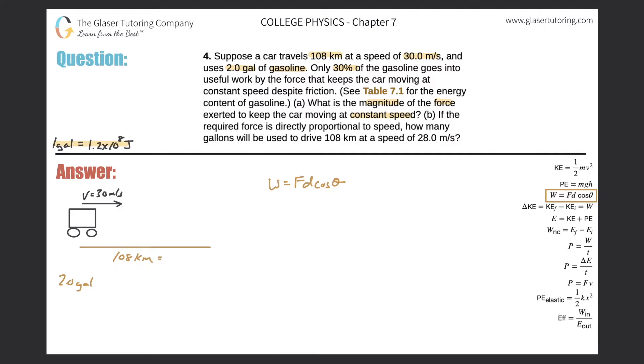So simply just move the decimal three places to the right. Or you can simply multiply it by 100. So 108,000 meters. So look at that. I already found the distance. So now that was simple. I just got to find the work. So how can I find the work done? Remember work is in terms of joules. How can I find the work done on the car?